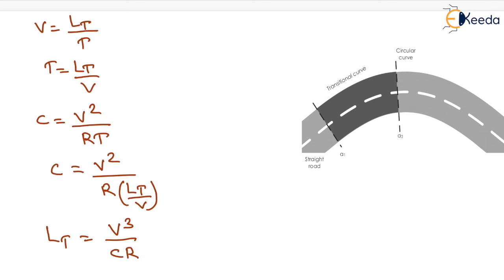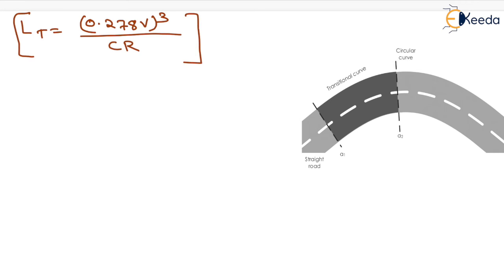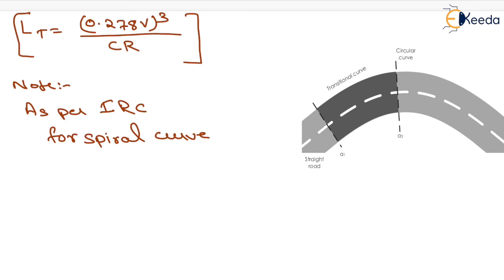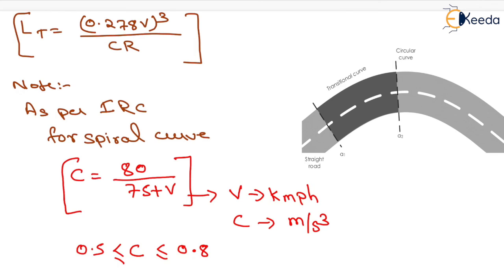Here the value of V is in kilometres per hour, so the length of transition curve also comes in kilometres. To convert LT to metres, the formula becomes LT = 0.278 V³ / (CR). That is the final formula for the length of transition curve. As per Indian Road Congress, for a spiral curve the value of C = 80/(75 + V), where V is in km/h and C is in m/s³. Generally the value of C ranges between 0.5 to 0.8.